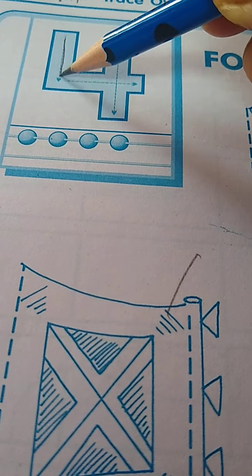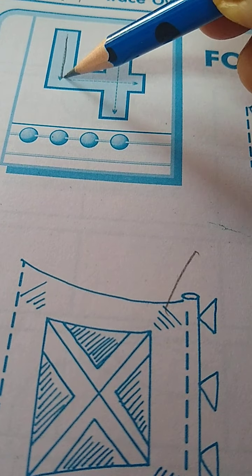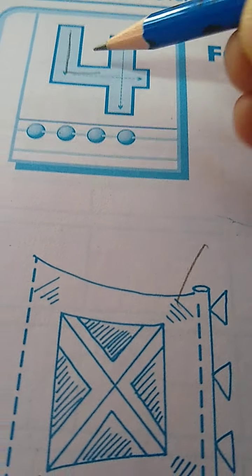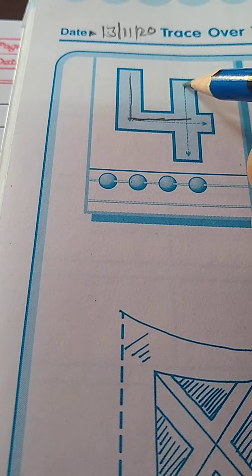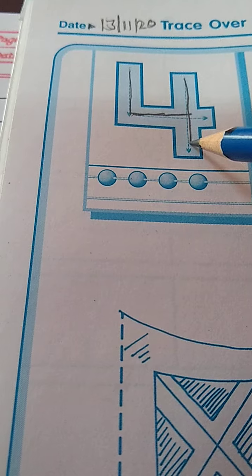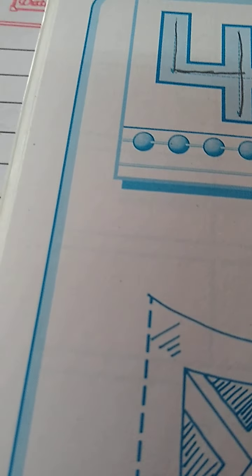Draw a standing line, then a sleeping line, then again a standing line. Now 4 is ready.